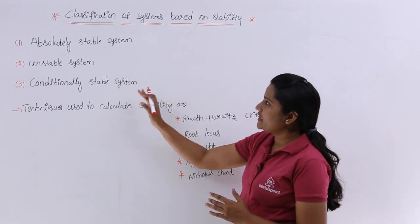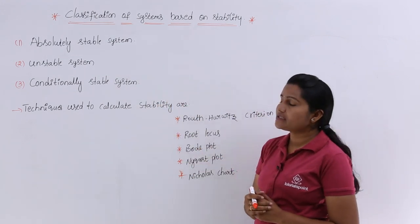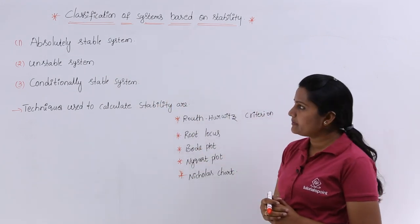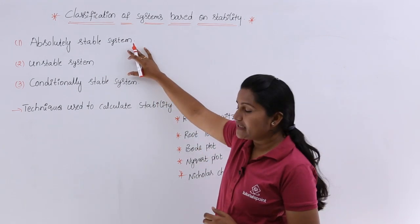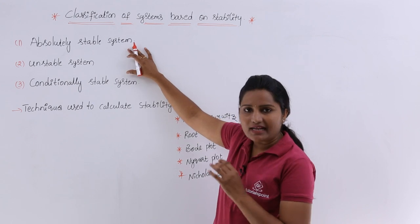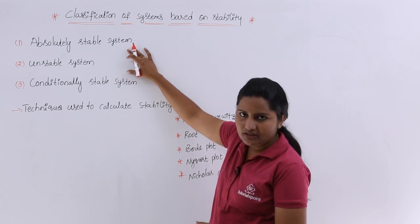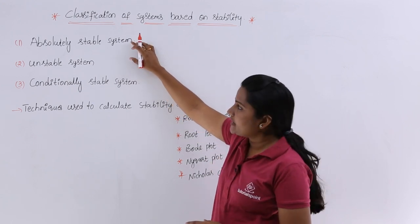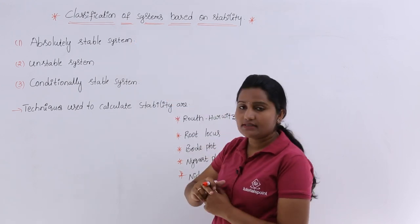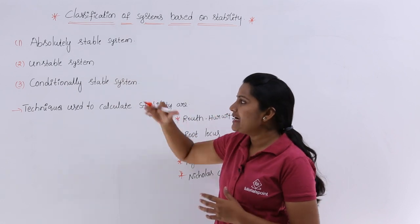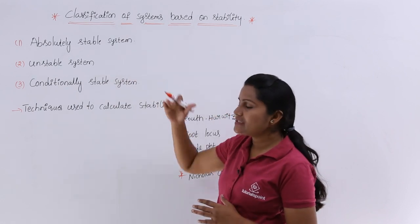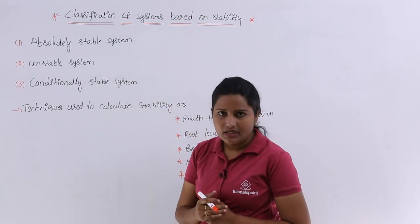Here is the classification of systems based on stability. Based on stability, systems are classified into three types: absolutely stable system, unstable system, and conditionally stable system.